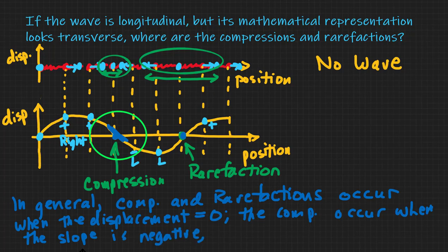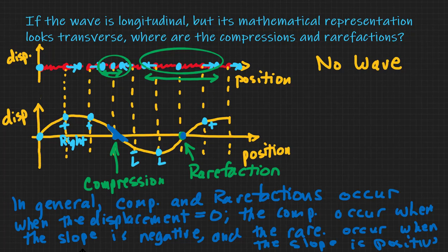And of course, the rarefactions occur when the slope is positive. So we get a positive slope right here. So compressions where there's negative slope and zero displacement, rarefactions where there's zero displacement and positive slope.